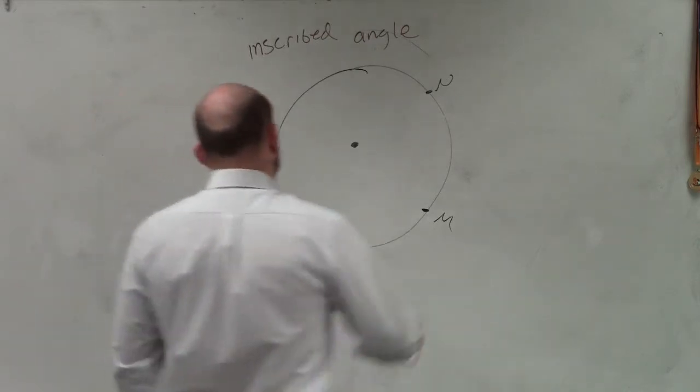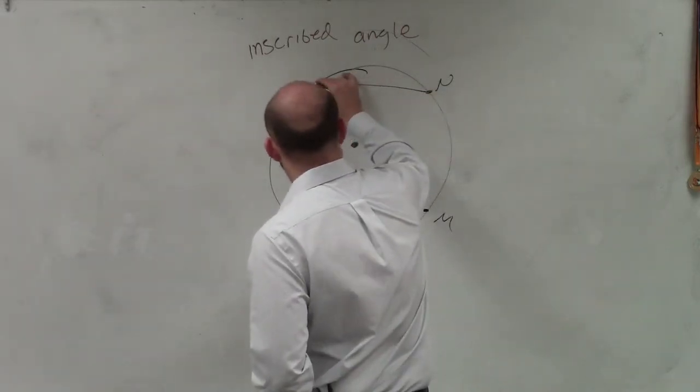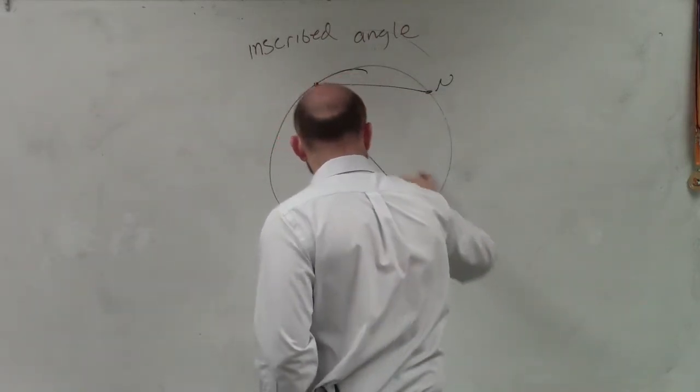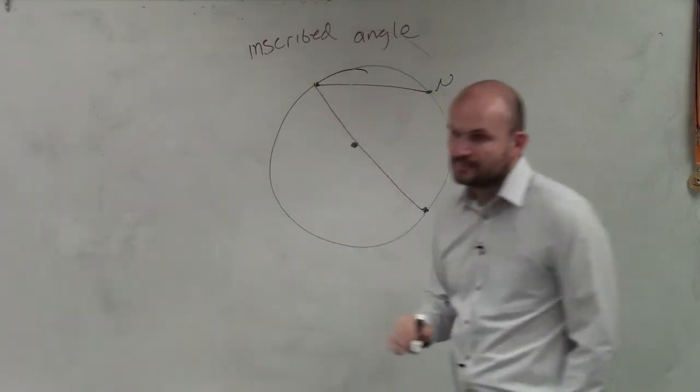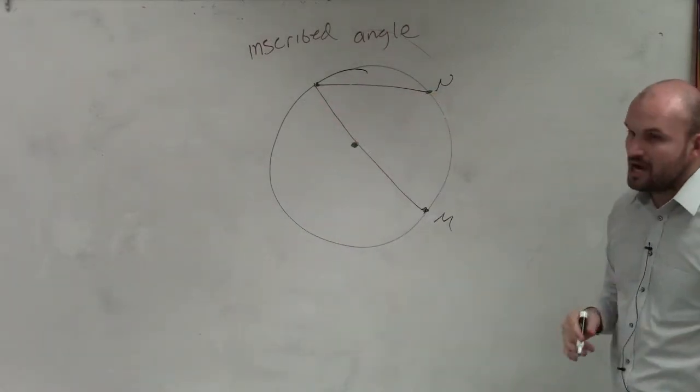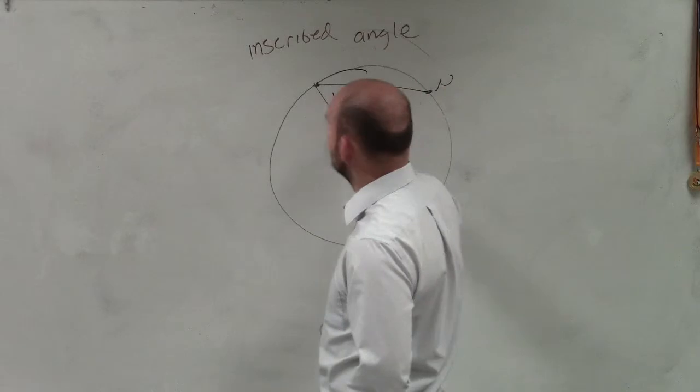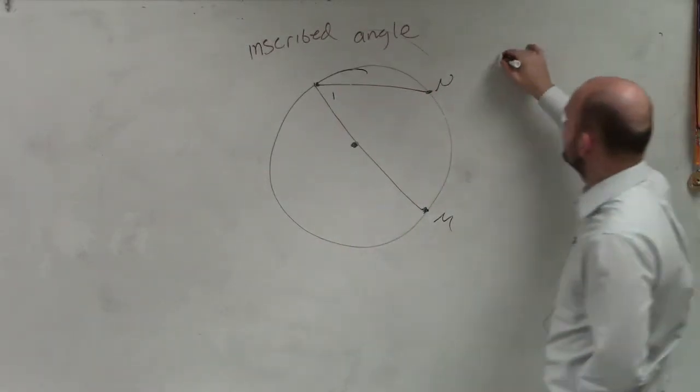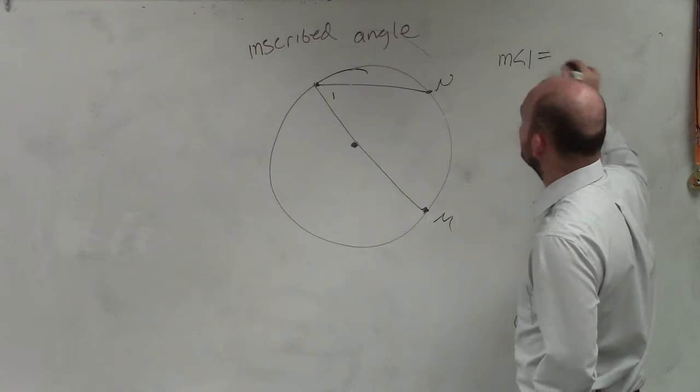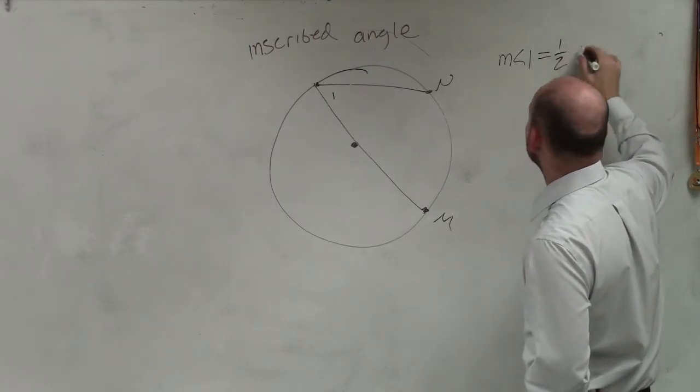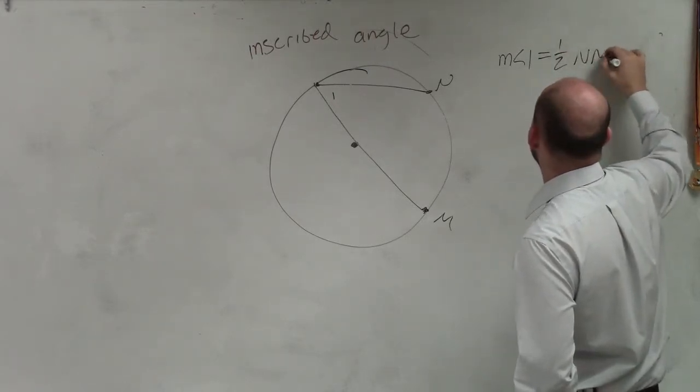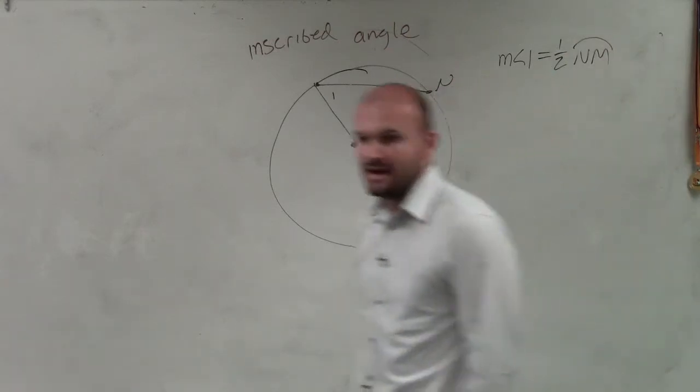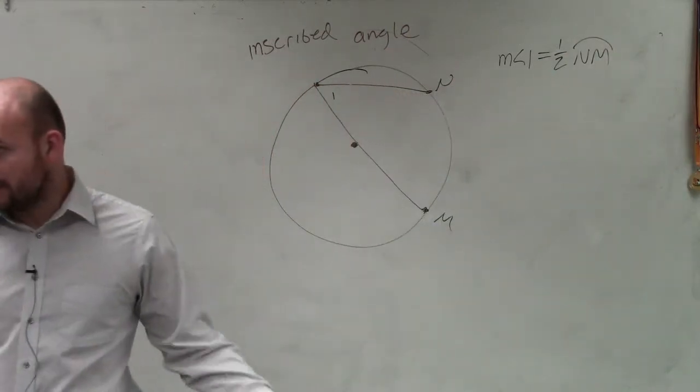Now, for it to be an inscribed angle, it has to have an endpoint on the circle. Now, remember what we talked about. Let's call this measure of angle, let's call this 1. When we're going over this, we can say that the measure of angle 1 is equal to 1 half the arc of NM. That's what we talked about in the measure of that.